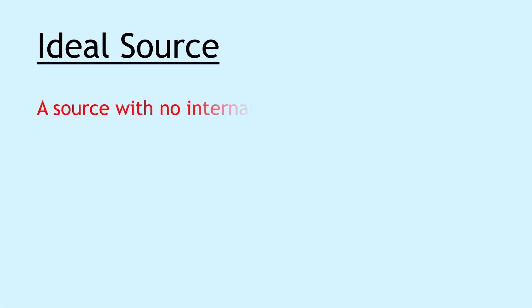Next we have an ideal source, and an ideal source is a source with no internal resistance, i.e. it has only an EMF. And this is different to a real source which does have an EMF and an internal resistance.